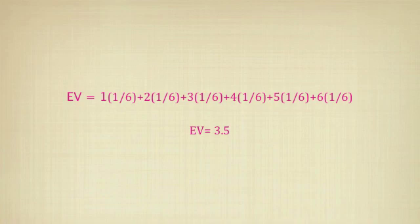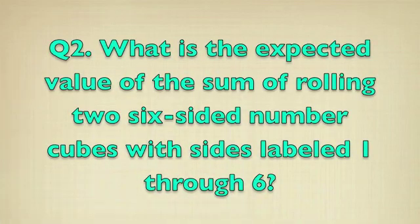Now, keeping this in mind, we can say 1 times 1 over 6 plus 2 times 1 over 6 plus 3 times 1 over 6 plus 4 times 1 over 6 plus 5 times 1 over 6 plus 6 times 1 over 6, in which we get the expected value to be equal to 3.5.